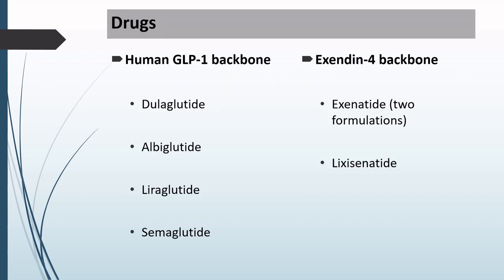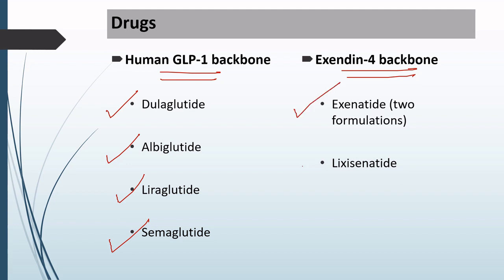The GLP-1 receptor agonist drugs are divided into two groups. The first group has a human GLP-1 backbone, and the second group has an Exendin-4 backbone. The drugs with a human GLP-1 backbone are Dulaglutide, Albiglutide, Liraglutide, and Semaglutide. The drugs with an Exendin-4 backbone are Exenatide and Lixisenatide.